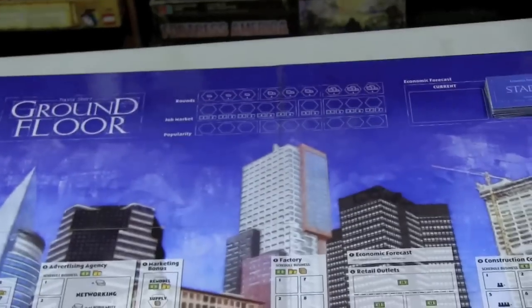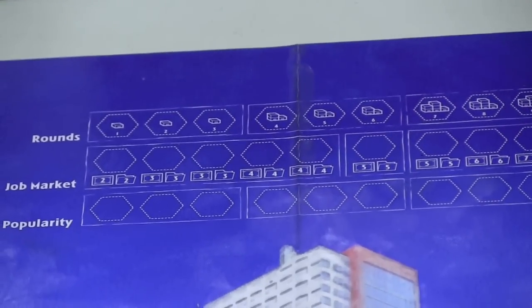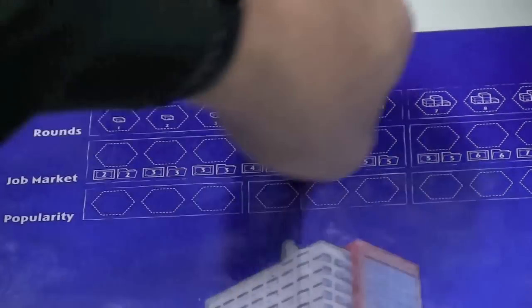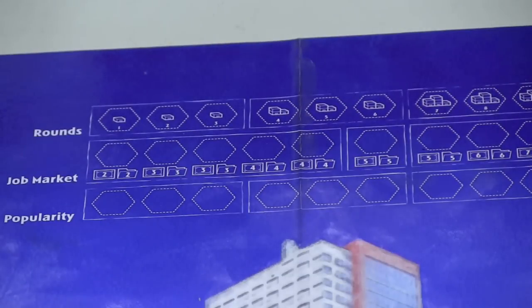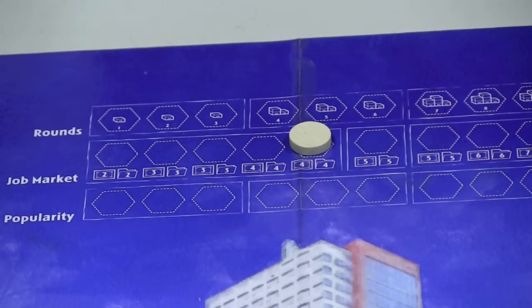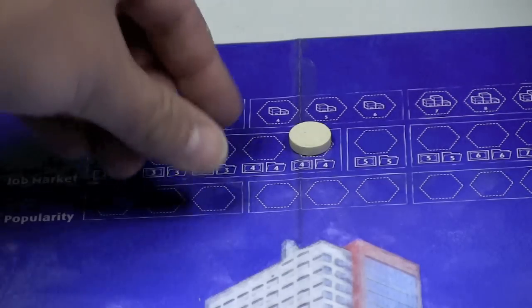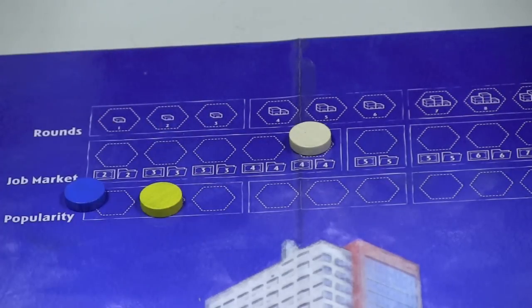Now, the game takes place over nine rounds, although the rounds are split into three different phases because there's basically different buildings that you can buy in each of these. And there's also a job market up here that shows how many employees are available for people to buy. And then there's a popularity track where each player is going to have a disc from their company, and that's going to show how popular you are over the course of the game. And popularity basically lets you go first, which is a big deal.